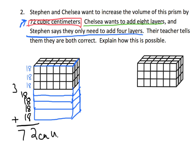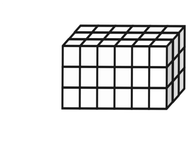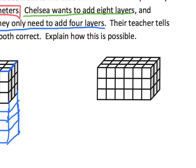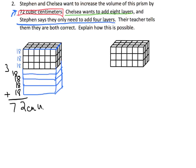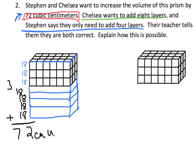Now Chelsea says we can do it in eight layers. We want to increase by 72, and she says we could do it in eight layers — because eight times nine is 72. Let's zoom in on Chelsea's rectangular prism. Eight times nine is 72. Where do you see a nine? I can see a nine right here — we're slicing it like a loaf of bread, and we can see that there are nine cubes on each slice.